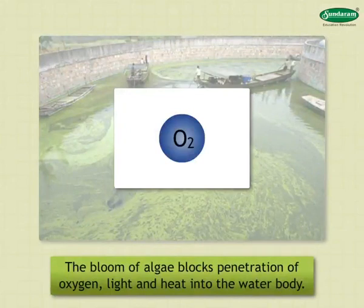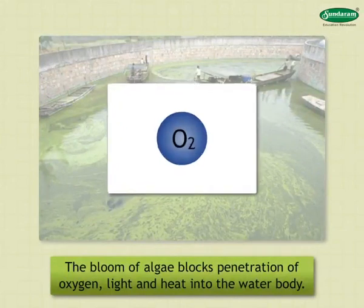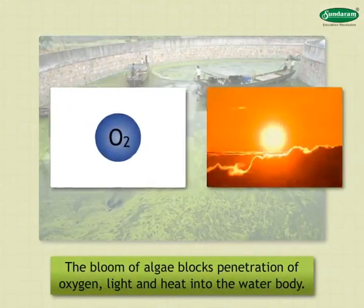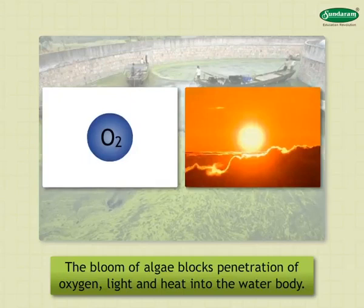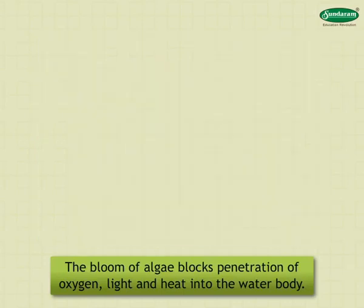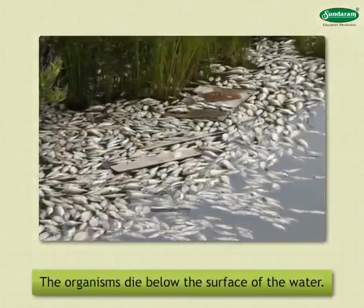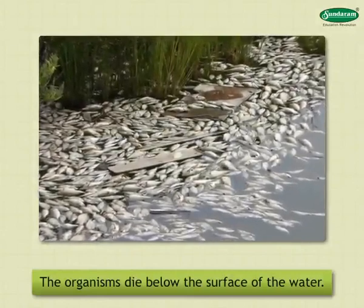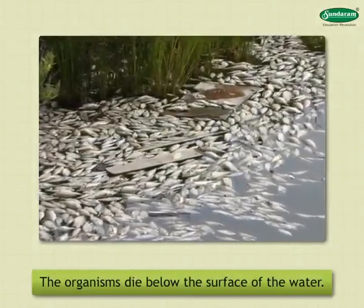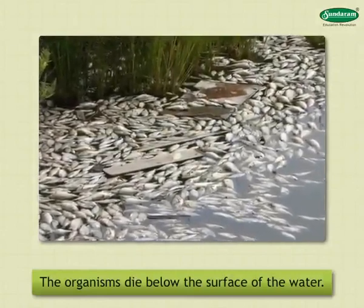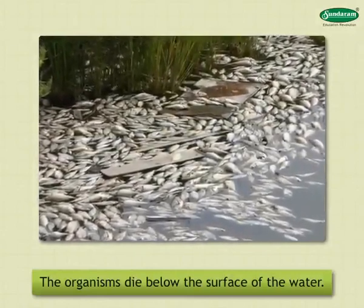The bloom of algae blocks the penetration of oxygen, light and heat into the water body. As a result, most of the organisms die below the surface of the water.